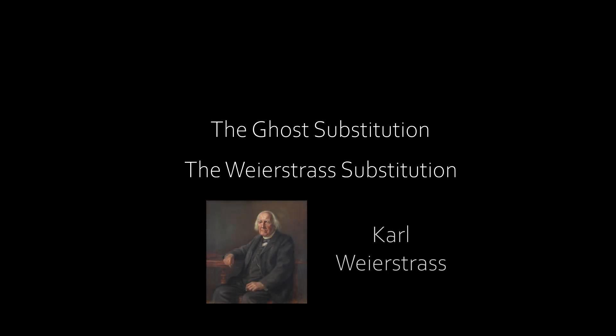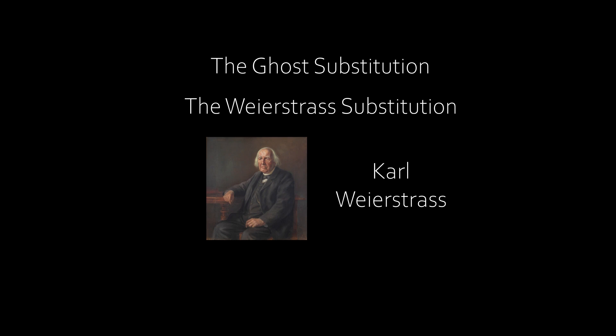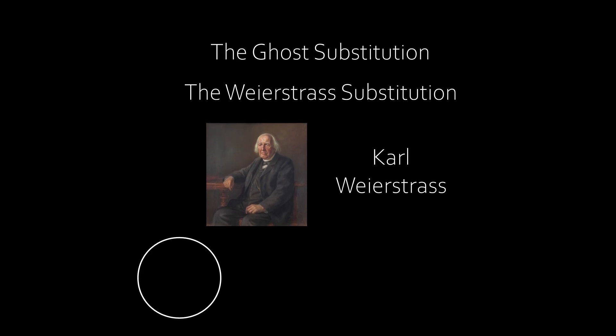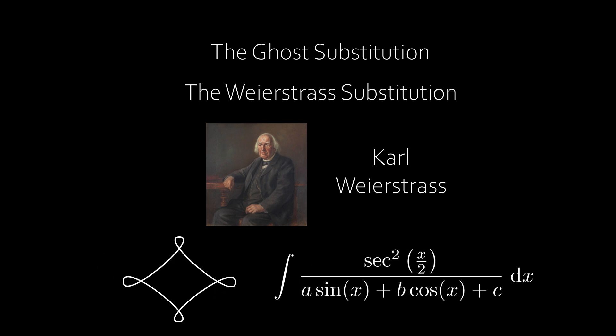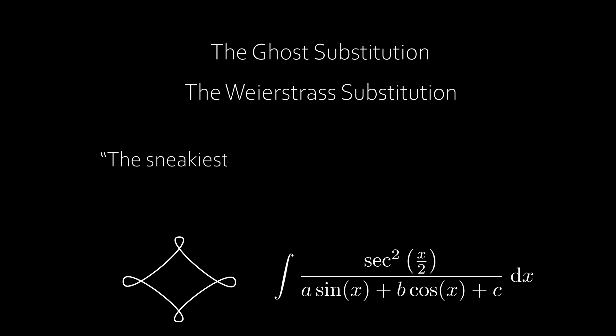Now this substitution is traditionally referred to as the Weierstrass substitution, named after the brilliant mathematician Karl Weierstrass. And this substitution doesn't only redefine the circle, but it allows us to solve extremely difficult trigonometric integrals with ease. And this substitution has been coined the sneakiest substitution ever.